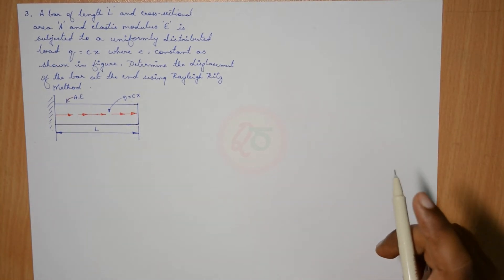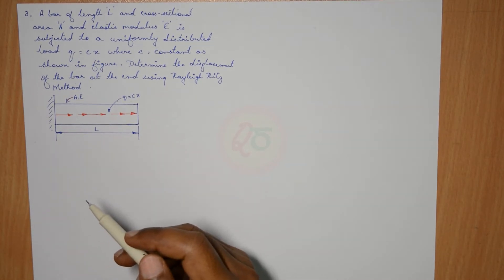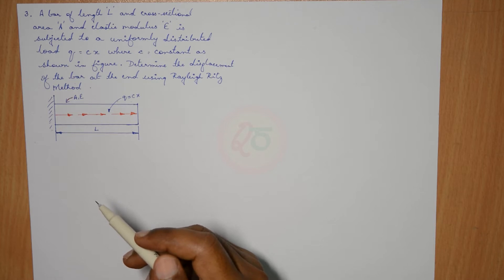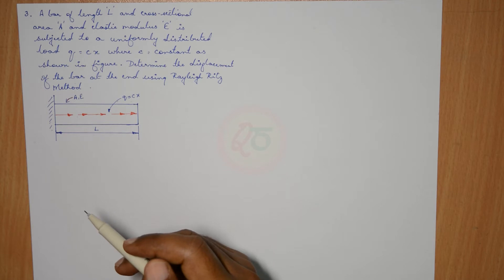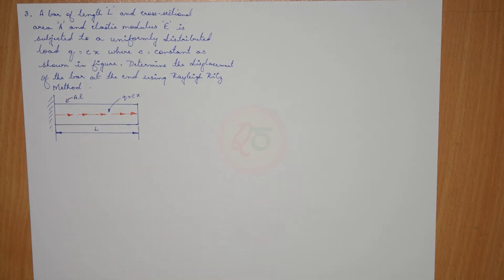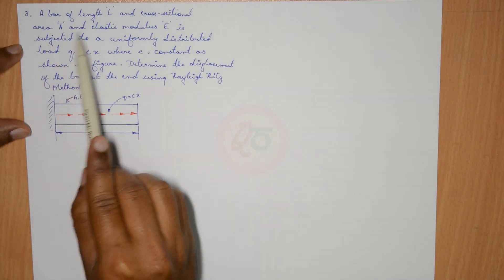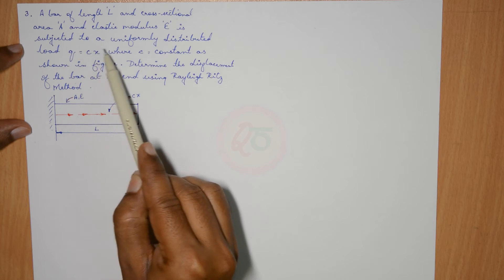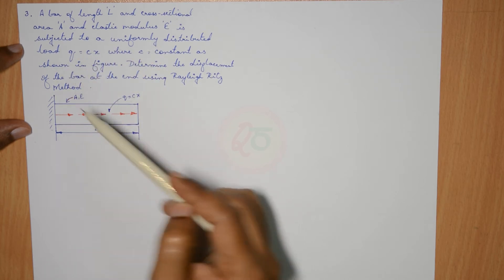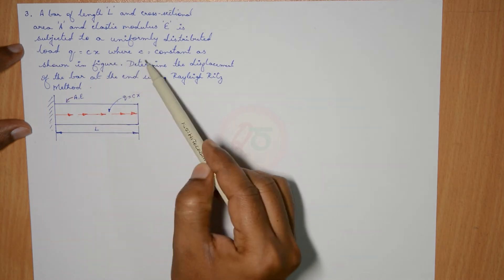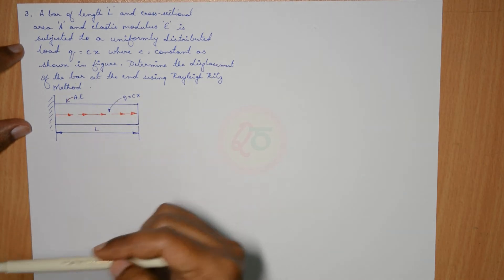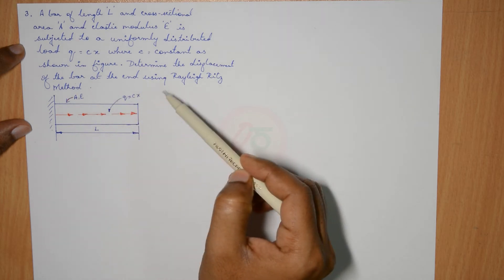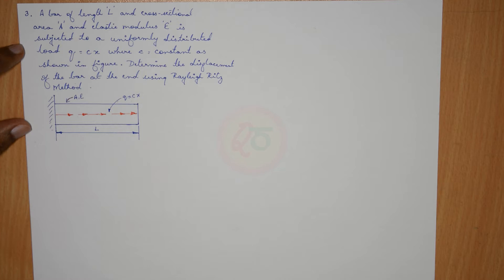Hello, welcome back to the next numerical on Rayleigh Ritz method. This problem is slightly different from the ones we have solved before, in the sense that we have been solving problems on bars with point loads, but now we have a uniformly distributed load. The question states: a bar of length L, cross-sectional area A, and elastic modulus E is subjected to a uniformly distributed load Q equals Cx, where C is a constant. Determine the displacement of the bar at the end using the Rayleigh Ritz method.